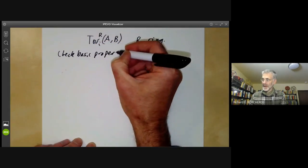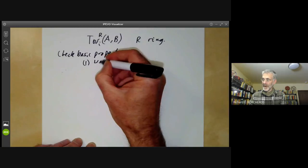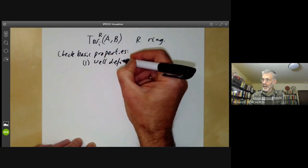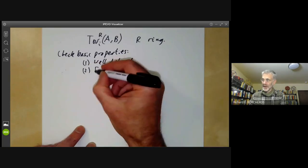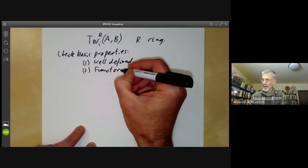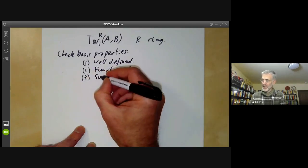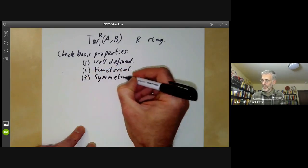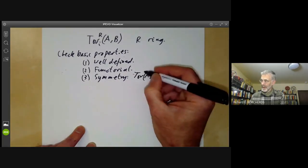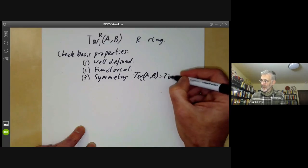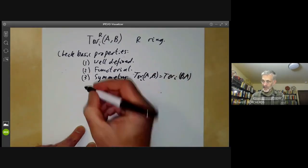The four properties we want to check are: first, that it's well-defined — I'll recall the definition in a moment. Second, we want to check it's functorial in A and B. Third, we want to check symmetry, which says Tor_i of A, B is naturally isomorphic to Tor_i of B, A.